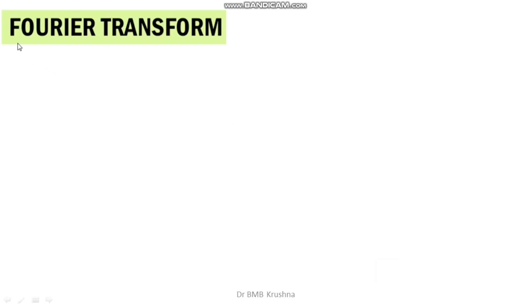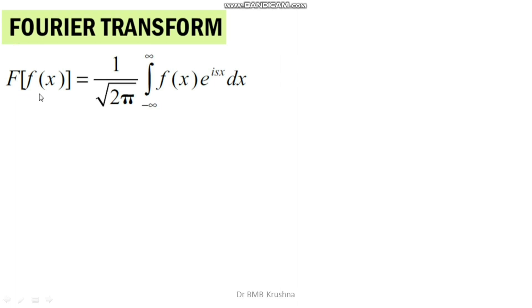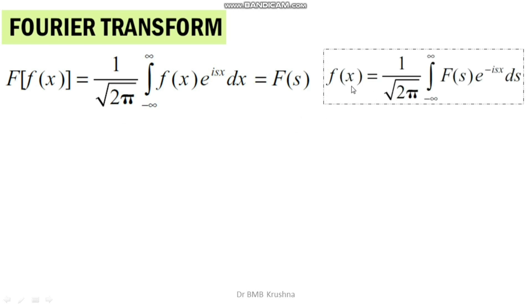The Fourier transform of f(x) is: F(s) = (1/√(2π)) ∫₋∞^∞ f(x) e^(isx) dx, where s is the parameter and x is the variable. The inverse Fourier transform is: f(x) = (1/√(2π)) ∫₋∞^∞ F(s) e^(−isx) ds, where the kernel is e^(−isx).